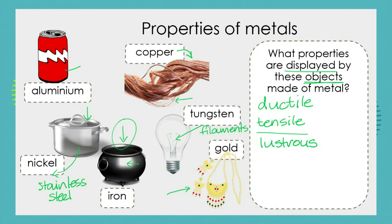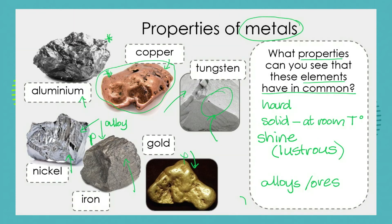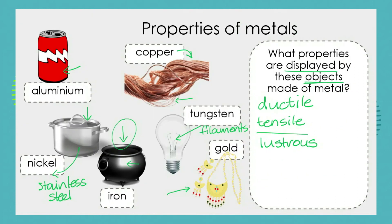We know that underneath the paint on the outside of our cool drink cans, the aluminium is shiny. We also know that the aluminium outer coating of the can is very very thin, so we know that another property is it is malleable — it can be hammered. Metals can be hammered into thin sheets.